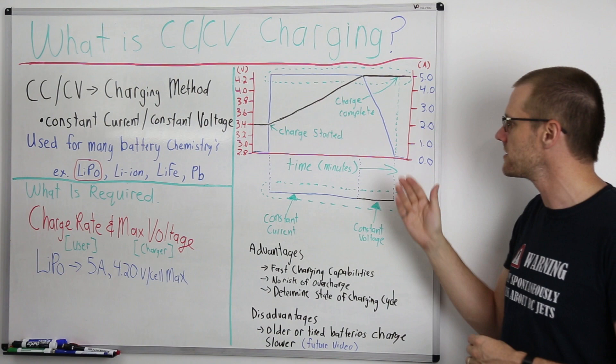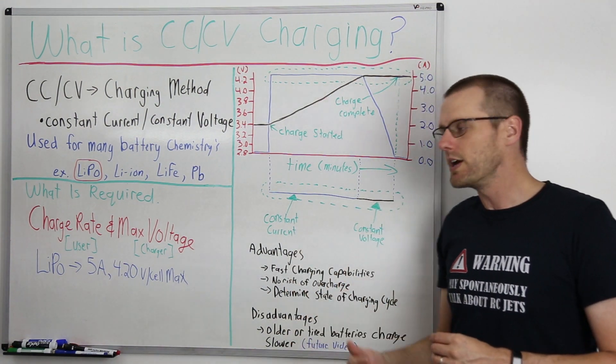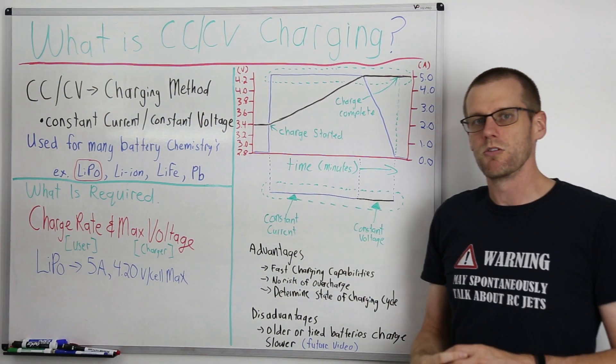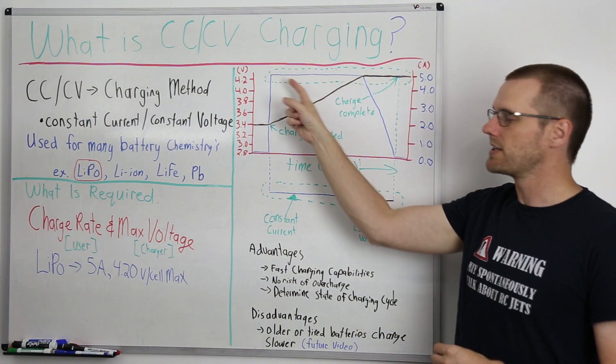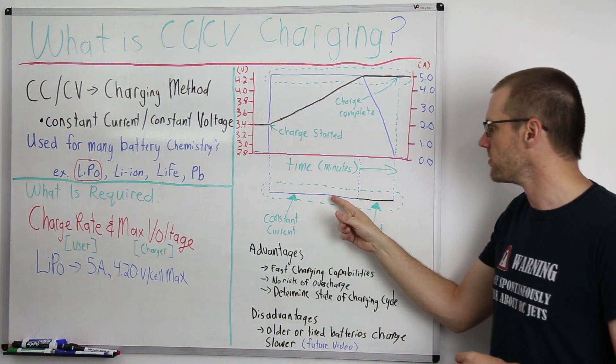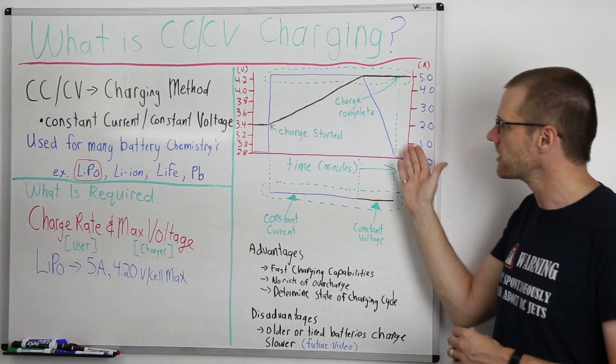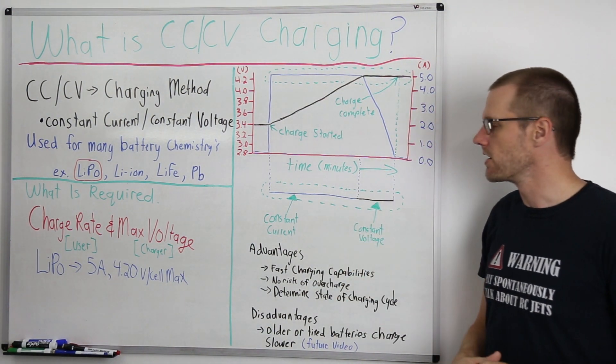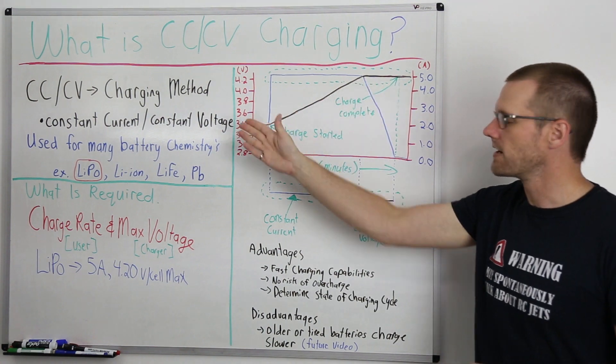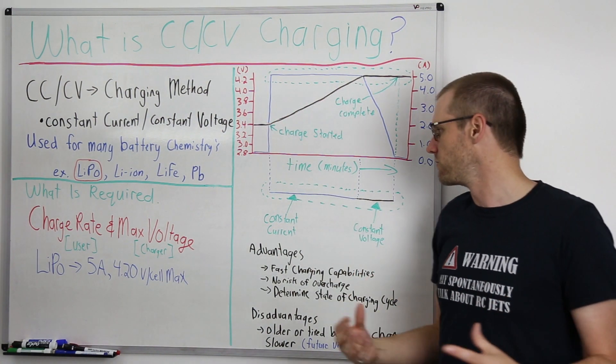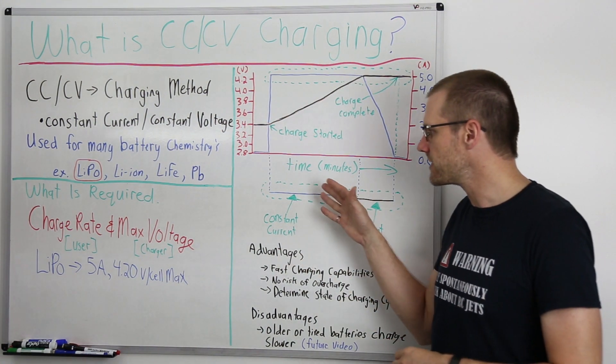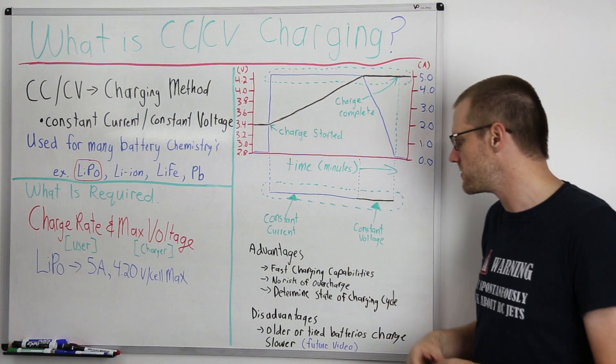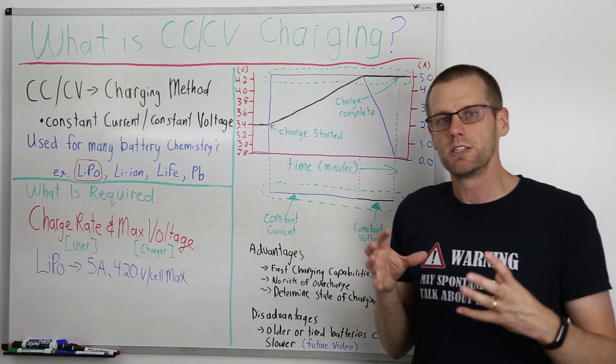So now if we go and break this down into a more simple looking diagram, this is where we're only taking the top section of our diagram, where the blue line here is current just like we have it up on our diagram above, and the black color is representing our charge voltage, which has been represented on the above diagram in black as well. This diagram is placed up here on the board to illustrate the constant current specific area as well as the constant voltage specific area.